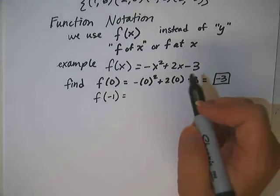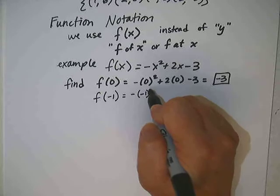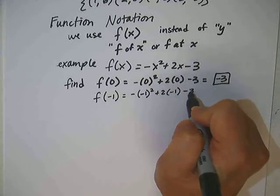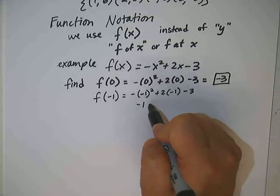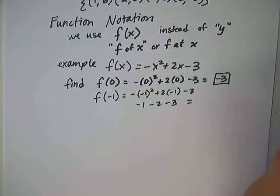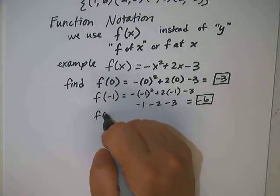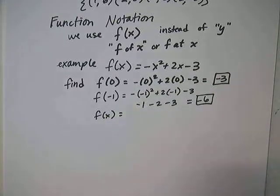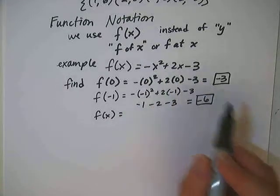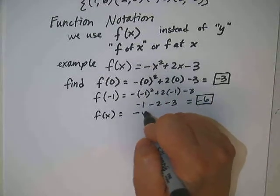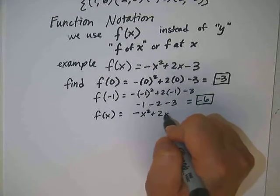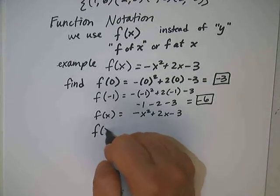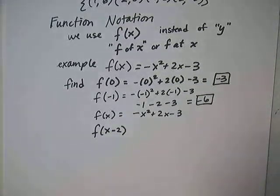Let's do another one. f(-1) — what does that mean I'm going to do? Plug in -1. So that gives me negative (-1) squared, which is positive 1. So I get -1 - 2 - 3, which gives me -6. What if I just ask you to find f(x)? If the x is in the parentheses, then what do I put in for x? x. I'm just basically asking you for the original problem.